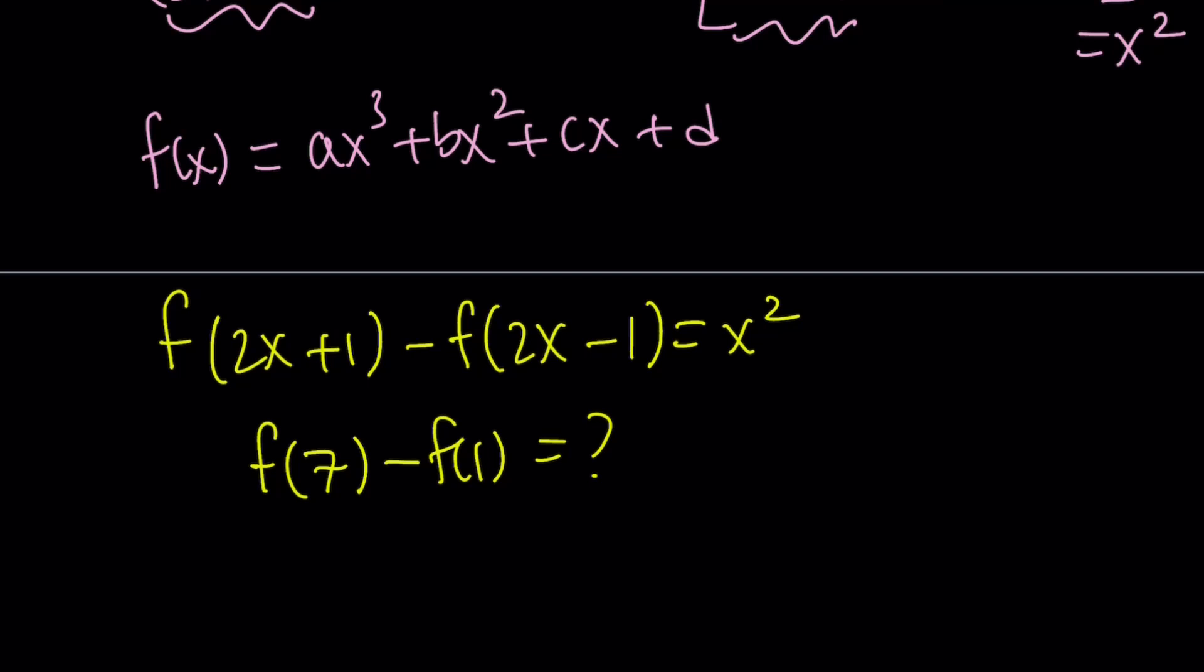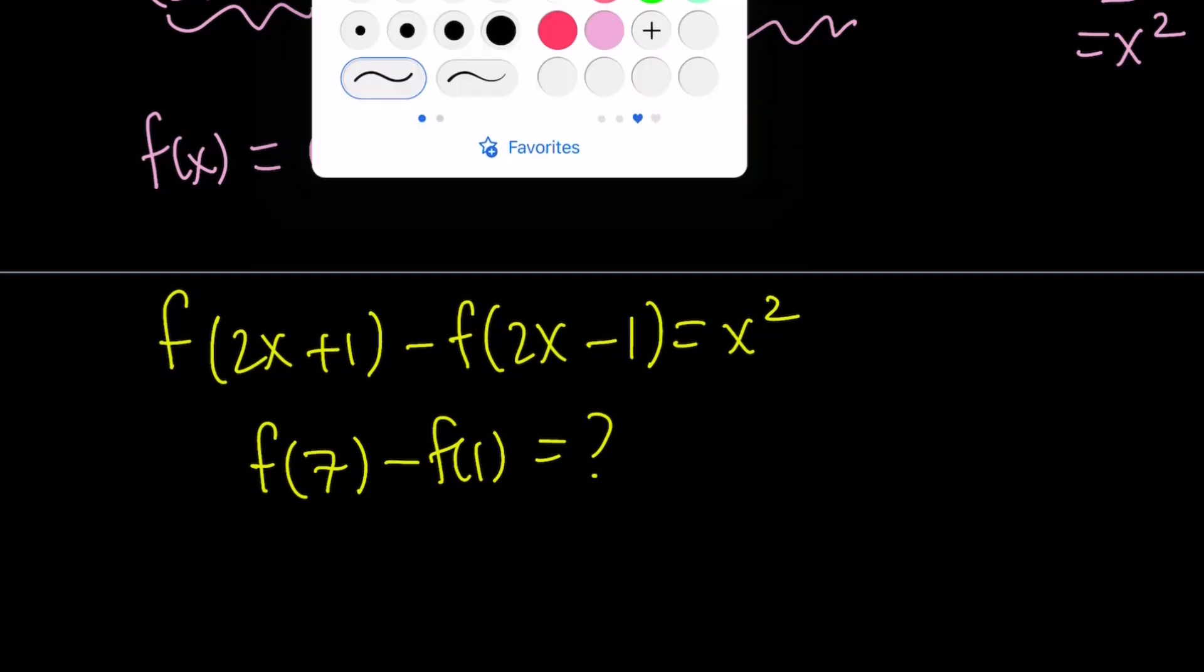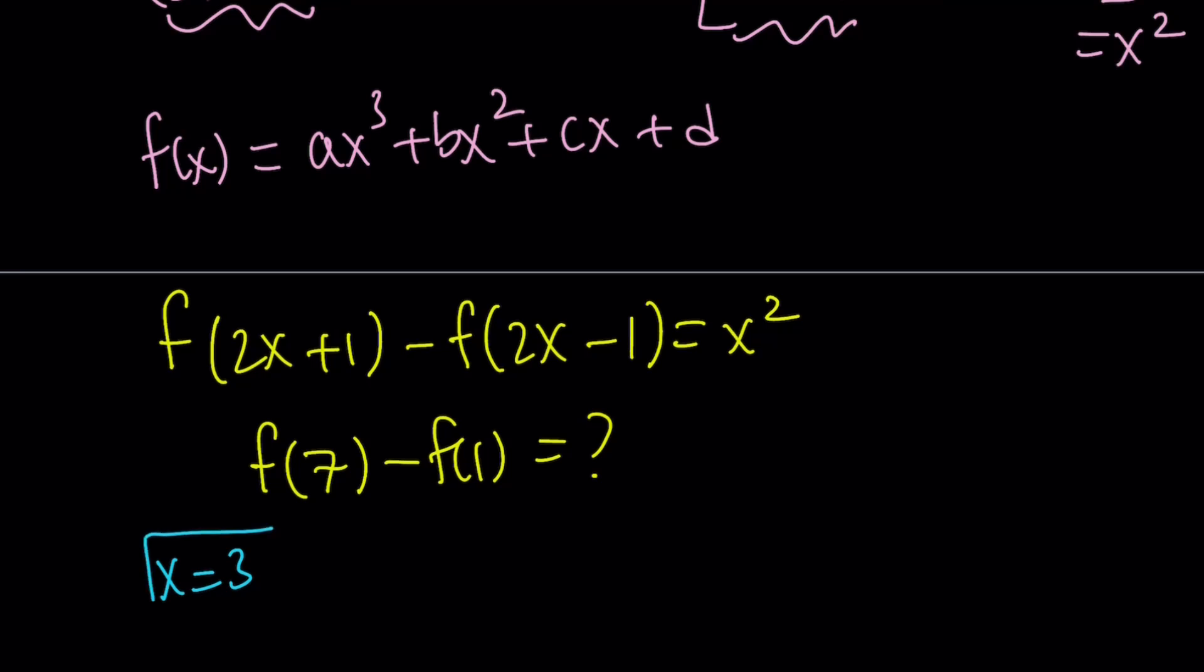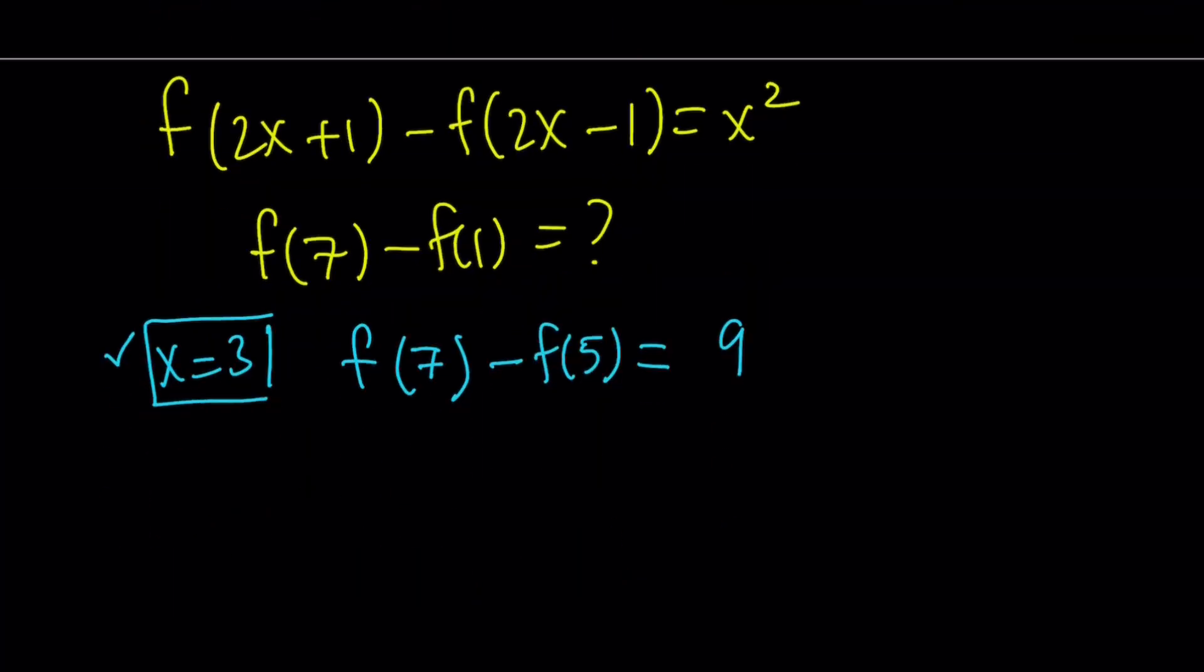I'm going to get f(7). So why not replace x with 3? Because that's going to give me f(7). If I replace x with 3, then I get f(7) - f(5) = 3² = 9. Awesome. But not so awesome because I don't need f(7) - f(5). I need f(7) - f(1). So is there any way I can get rid of the negative f(5)? And yes, there is a way to do it because 5 is an odd number.